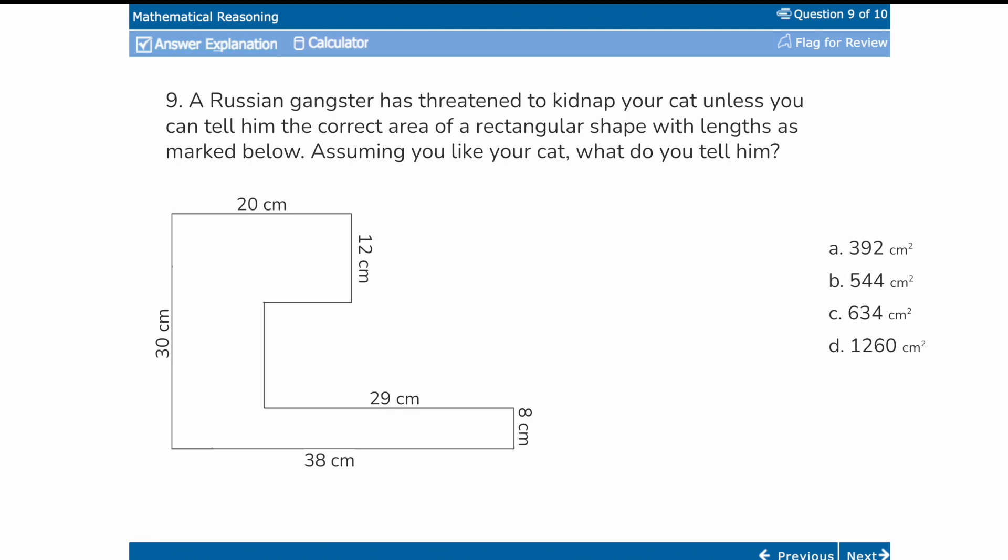Let's take a look at a GED style question. This shape is a little different. It's a little more complicated. It looks like a C got punched in its face maybe, or it looks like a cartoon character trying to flex a bicep, a really kind of like weak bicep right there. Anyway. Again, we see we have a bunch of information and we are lacking some information. There are some sides we don't know. And let's see what it's asking. A Russian gangster has threatened to kidnap your cat unless you can tell him the correct area of a rectangular shape with length as marked below. Assuming you like your cat, what do you tell him? All right. Well, what's that one weird trick? I don't know what the area is going to be, but if I draw in some lines, now I have three rectangles. I can deal with the rectangle. Let's do it.